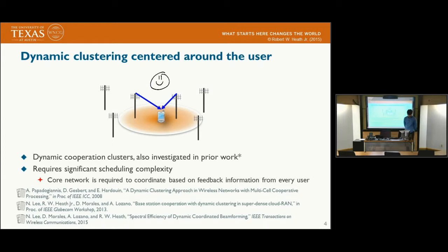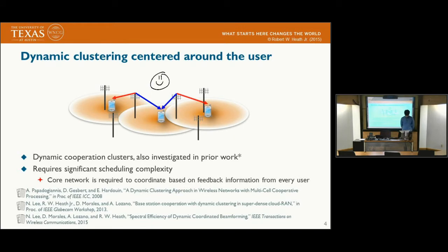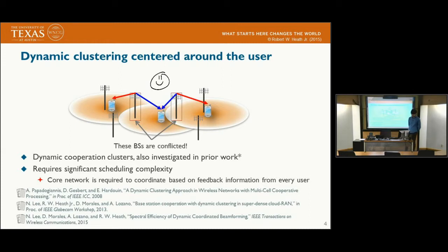The second main approach is dynamic clustering. The philosophy of dynamic clustering is that the user itself makes a cluster by choosing the multiple closest base stations. By doing this, the user can always locate at the cluster center, which protects it from out-of-cluster interference. The problem is that there can be base station conflict, which occurs when two different users want to simultaneously connect to the same base stations. To resolve this, significant scheduling complexity is required.